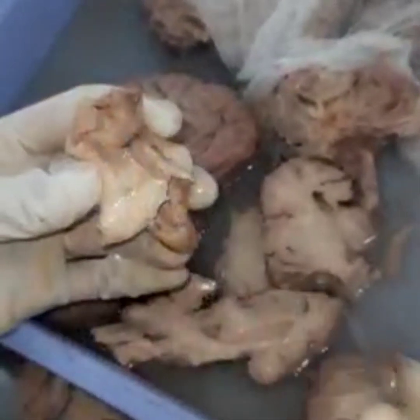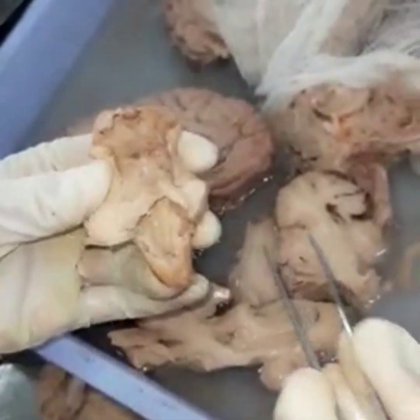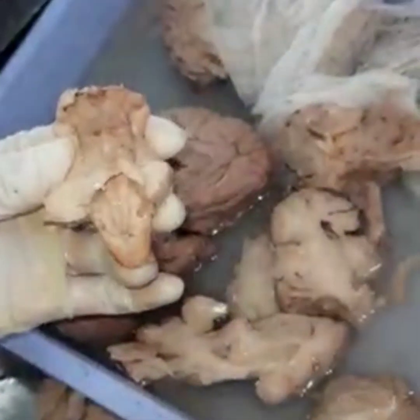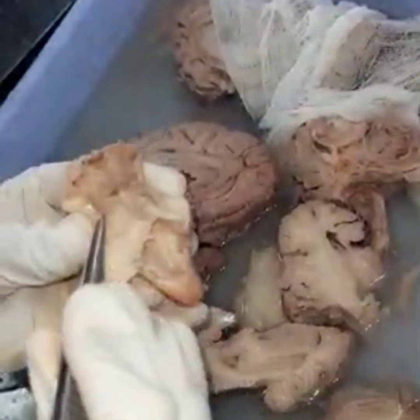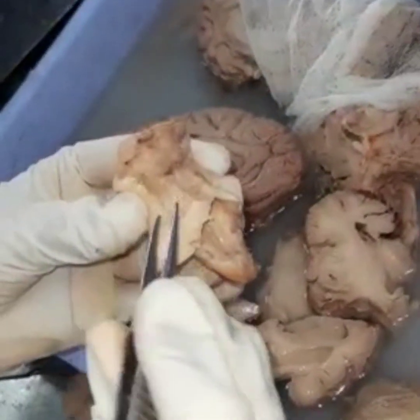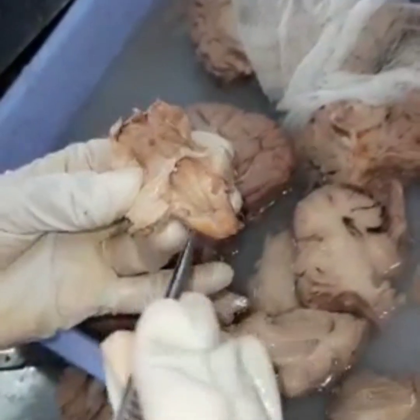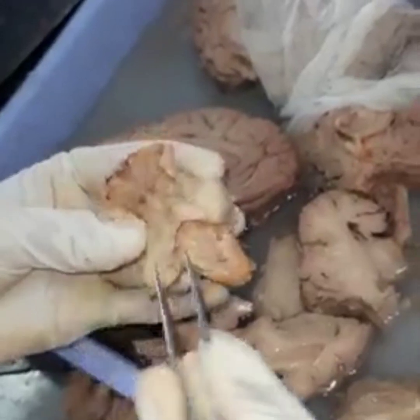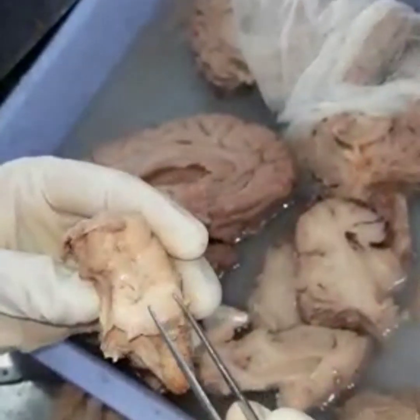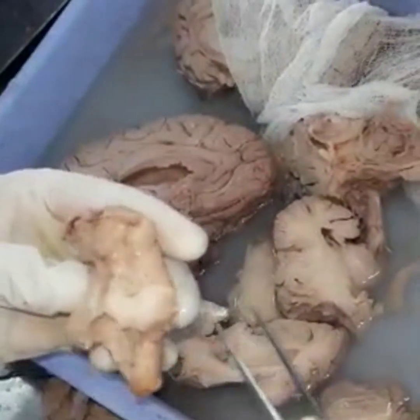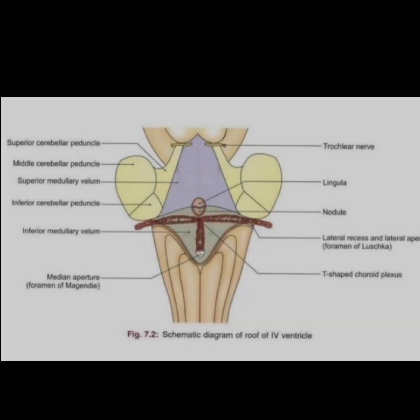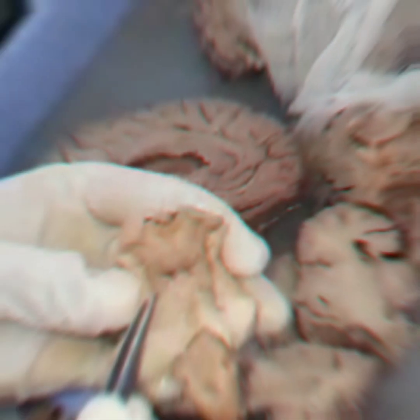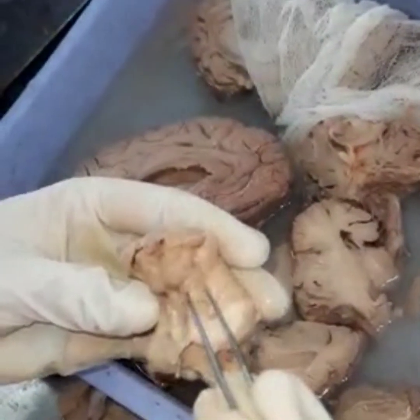This brain stem is connected to the cerebellum through three peduncles. These are the superior cerebellar peduncles and inferior cerebellar peduncles. Here we have the superior cerebellar peduncles.